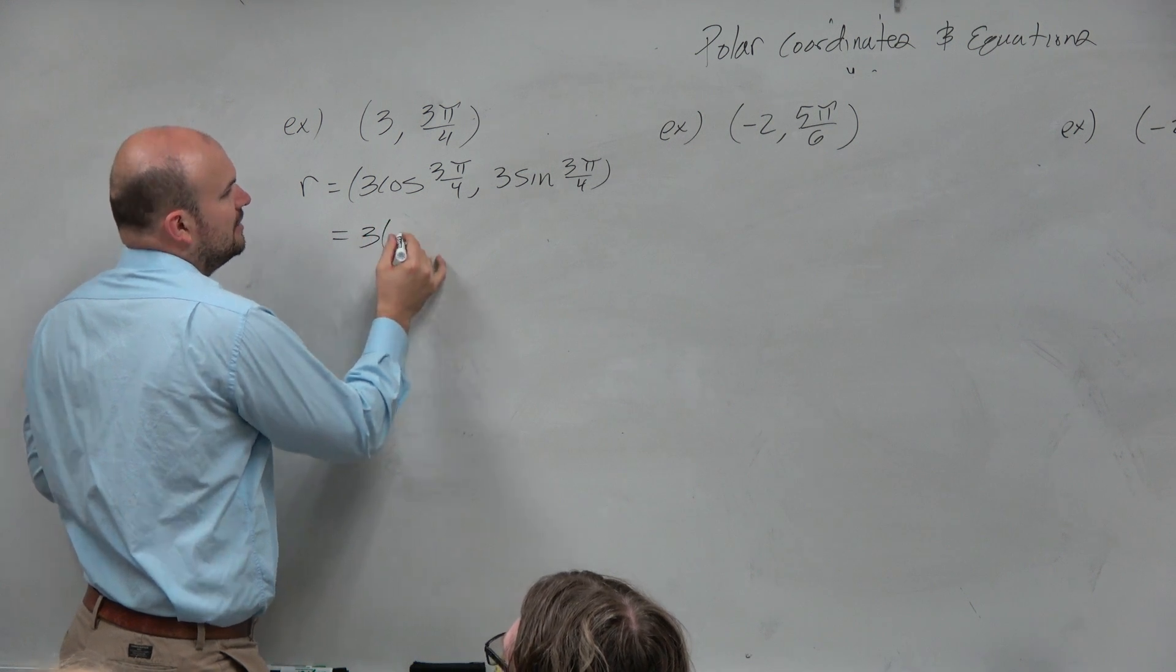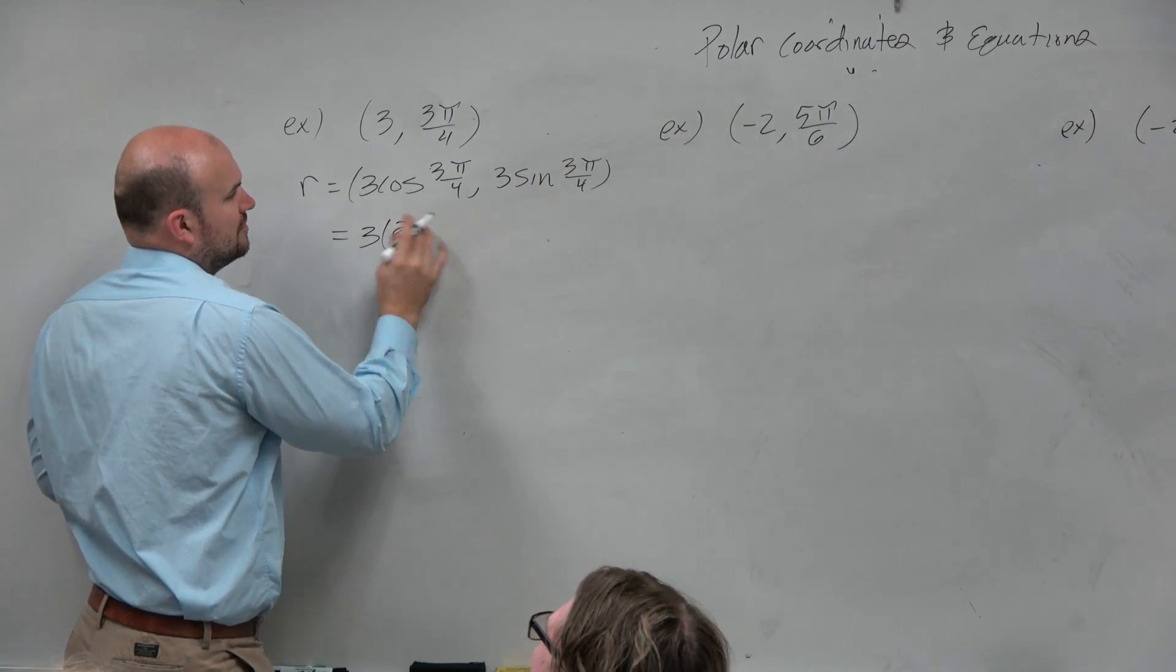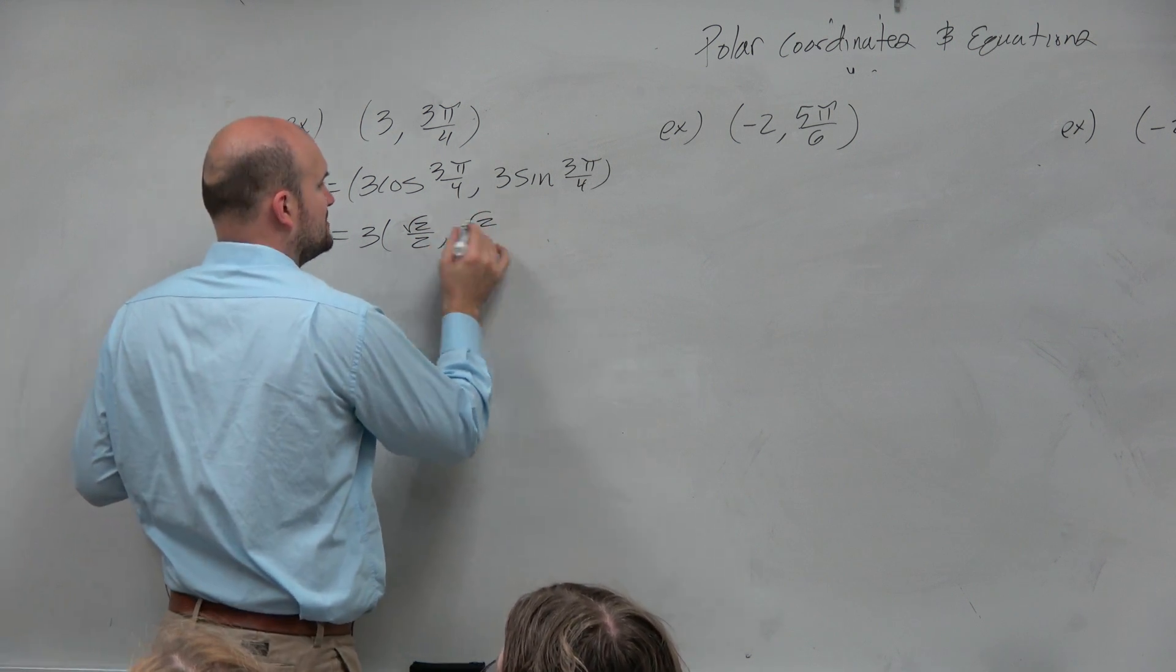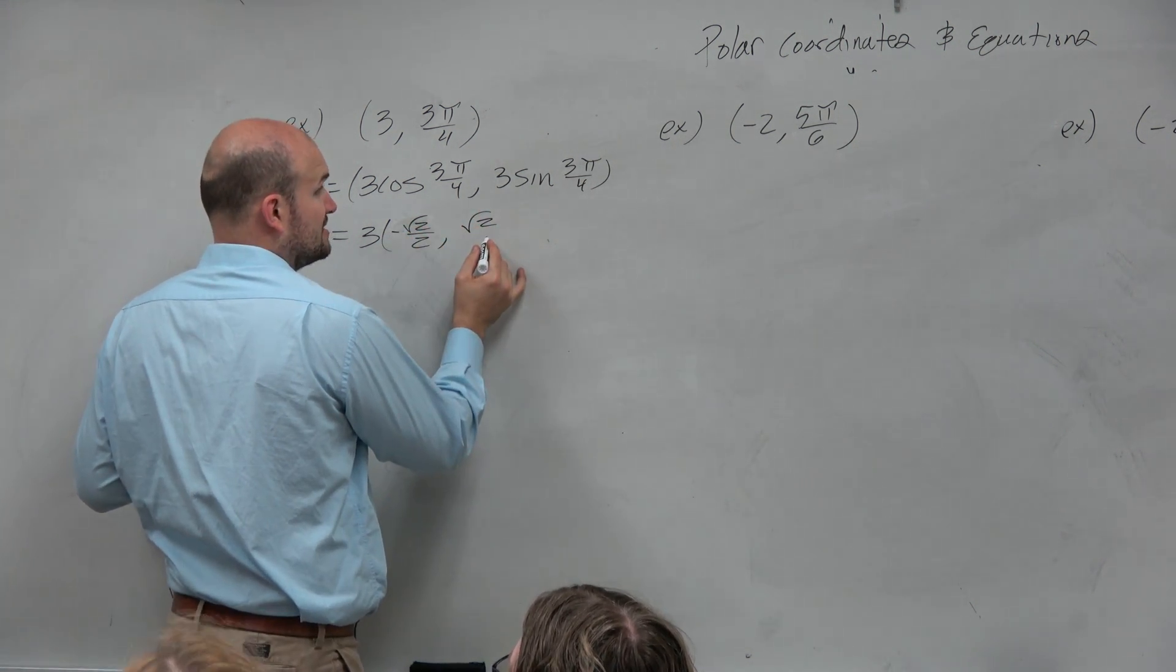So therefore, that would be 3, let's see, that's 2. Oops, sorry. Square root of 2 over 2, comma, square root of 2. Oops, I'm sorry. That's negative, right, because it's in the second quadrant.